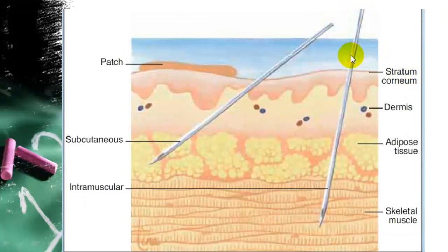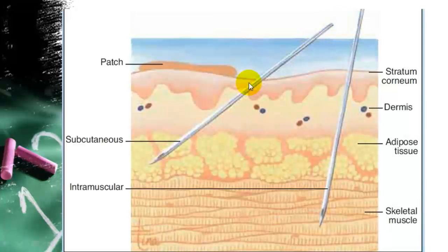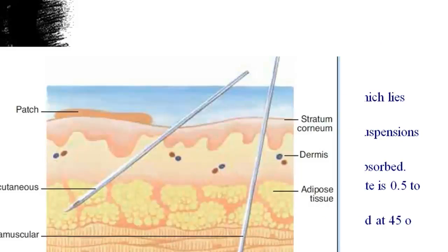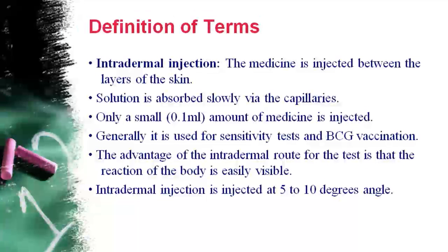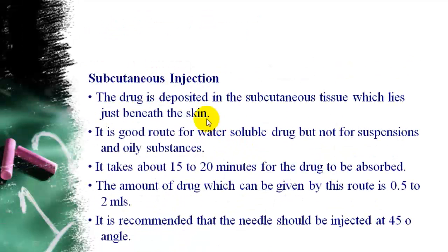Looking at the diagram: the epidermis is on top. For intradermal injection, you inject into the epidermis. For subcutaneous, you go deeper — needle size 0.5 at up to 2 ml. An important point is knowing the correct amount for each route: intradermal is 0.1 ml, subcutaneous up to 2 ml, and you must also know the amounts for deltoid, intramuscular, and intravenous routes.